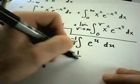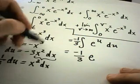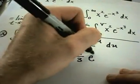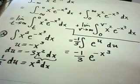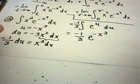So negative one third du, and I'll end up getting negative one third. If you integrate e to the u, hey, you just get e to the u, but in this case u is negative x to the third. So if I plug all of this stuff back in,